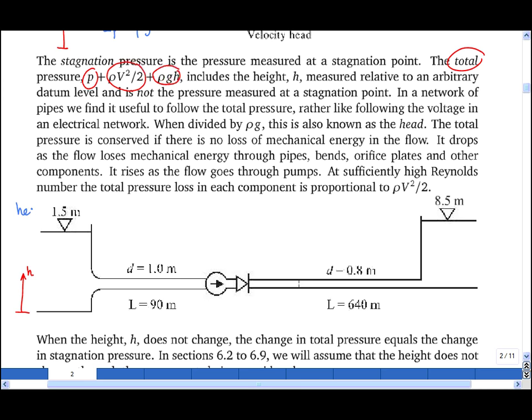I might start with a head of 1.5 meters. As the fluid goes through the pipe, we will have an entry loss of total pressure. Then we will have a loss of total pressure within this pipe, known as a pipe loss. That's due to friction with the pipe walls.